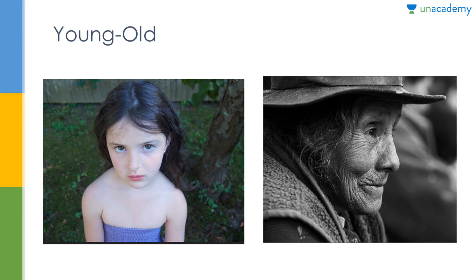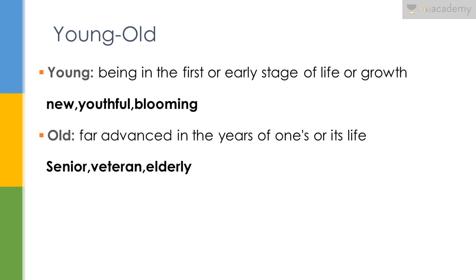The next pair of words are young and old. Young is a very simple word — you always come across people saying you're such a young girl, innocent, and you don't know how to make decisions in your life. In the graphic you can see how young this girl is. Old, on the other hand, basically means anybody who has aged with time. You can see this frail woman — her skin and the age on her face show what old means. Young basically means being in the first or early stage of life or growth, and its synonyms are new, youthful, and blooming.